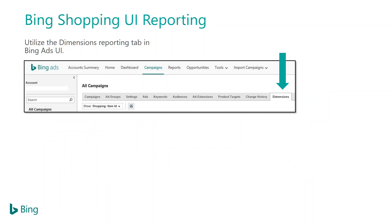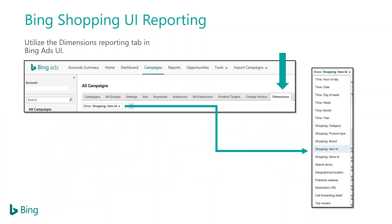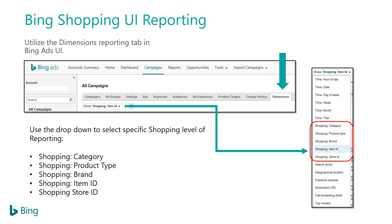We're going to start with the dimensions report within the UI. When you're in the Bing Ads UI, you have a new tab once you've started a shopping campaign. Once you have shopping campaigns running for about a week or two, you start to accumulate data. Rather than pulling reports out separately, you can go directly into the dimensions tab and start pulling reports from there. Within the dimensions tab, you have a dropdown filter with five options for shopping: category, product type, brand, item ID, and store ID.